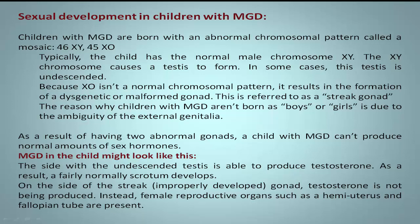Because XO isn't a normal chromosomal pattern, it results in the formation of a dysgenetic or malformed gonad. This is referred to as a streak gonad.